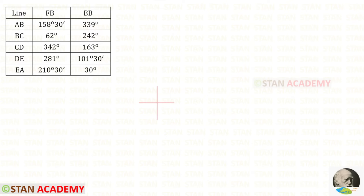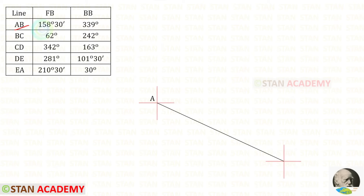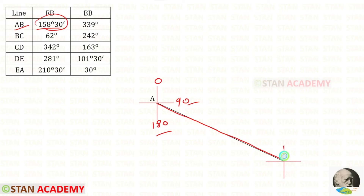Now let us start drawing the traverse. First let us draw the direction symbol. Let us keep this station as A. The fore bearing of AB is given as 158 degrees 30 minutes. We know that here we have 0 degrees, here 90, and here 180. Since 158 comes between 90 and 180, we have to make a line in between.